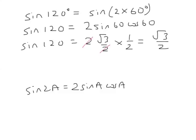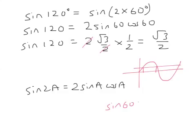We knew that from the shape of the sine graph. Here's the sine graph. That angle there — if that angle is 60, that angle there is 120. They're the same. So the sine of 60 and the sine of 120 are the same.